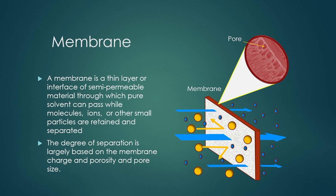As shown in the picture, the membrane has pores. The degree of separation largely depends on the membrane charge and porosity and pore size. That means the degree of separation depends on membrane characteristics like pore size, whether the membrane is charged or not, and also the strength of the membrane — these are all required for degree of separation assessment.